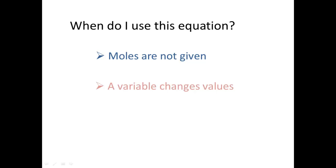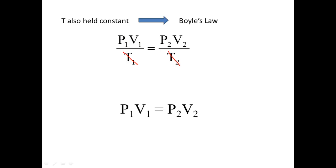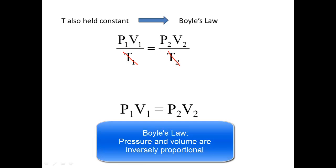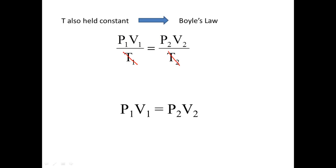Now, we can use the combined gas law to derive equations for some of the gas laws that we talked about in class earlier this week. And one of those is Boyle's law. So, Boyle's law is the combined gas law where we also hold temperature constant. And what we get, if we look at our combined gas law, if we hold temperature constant, that means T1 and T2 are equal to each other. So, what we can do is just cross those variables out of the equation and we're left with P1 V1 equals P2 V2. This is called Boyle's law. So, you can derive Boyle's law, the equation for Boyle's law, from the equation for the combined gas law.